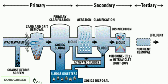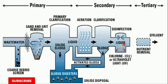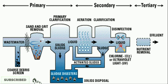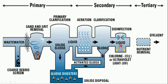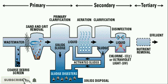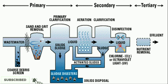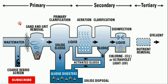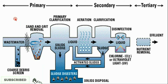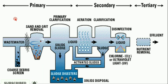Here you can see sludge and activated sludge indicated in the diagram. You can also see the disinfection tank, where chlorine gas is being sent into the water to kill microorganisms.